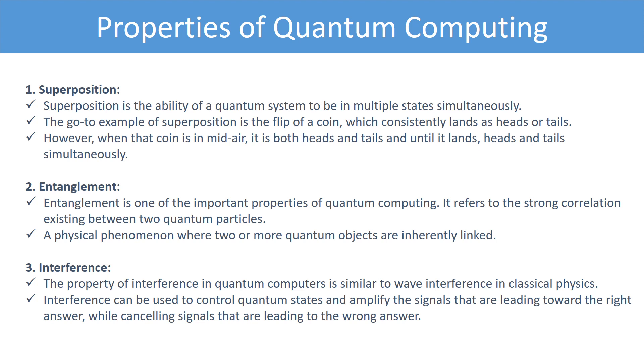Third is interference. The property of interference in quantum computers is similar to wave interference in classical physics. Interference can be used to control quantum states and amplify the signals that are leading toward the right answer, while cancelling signals that are leading to the wrong answer.